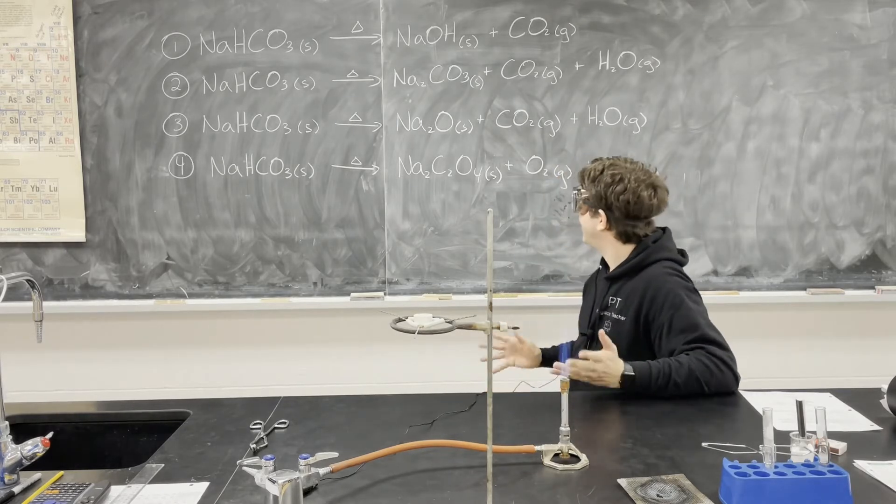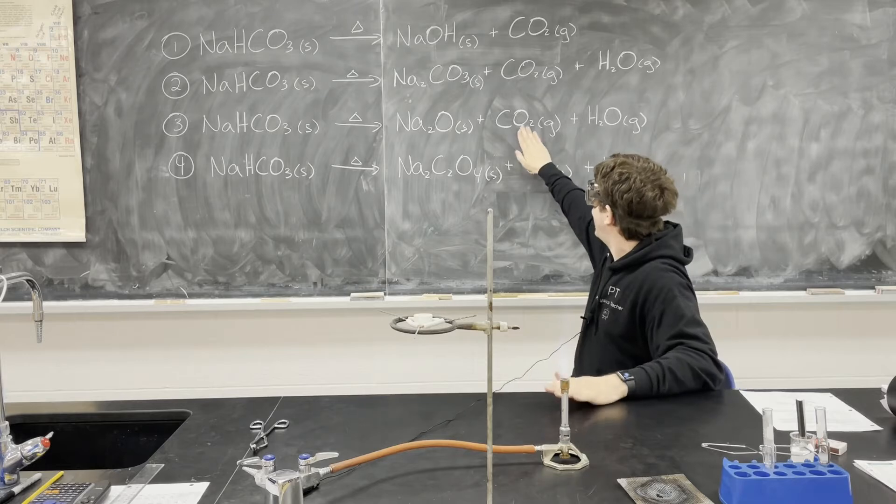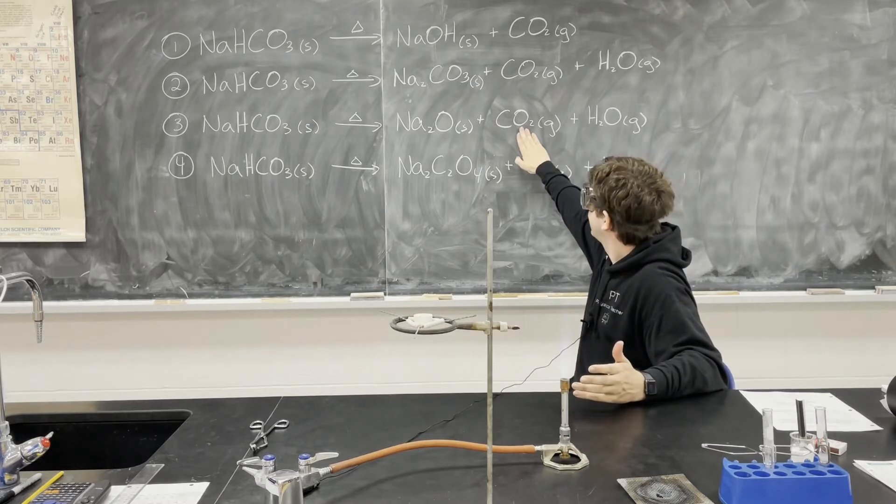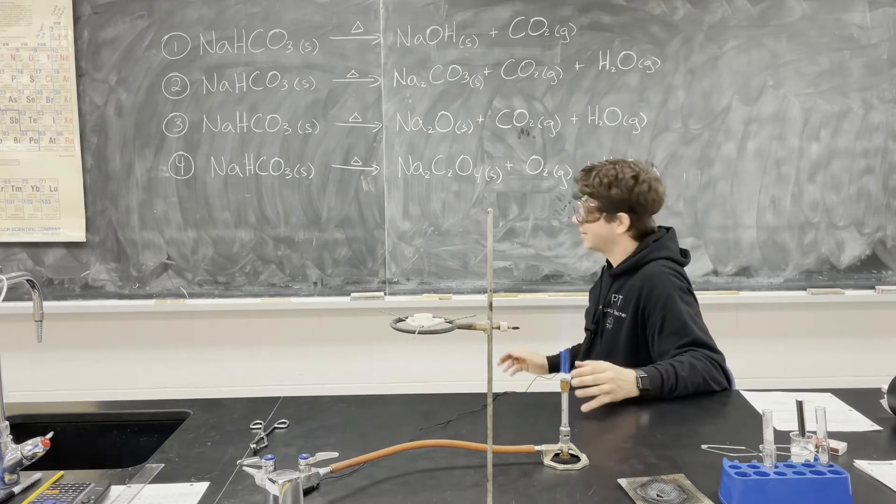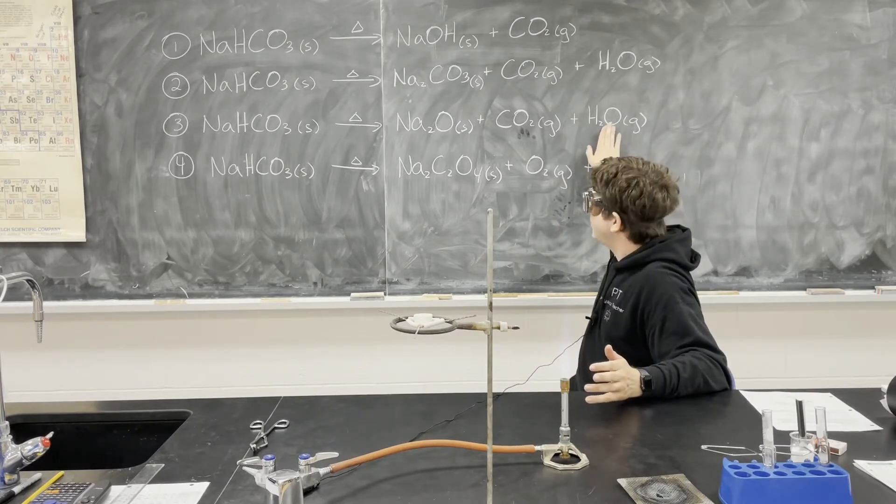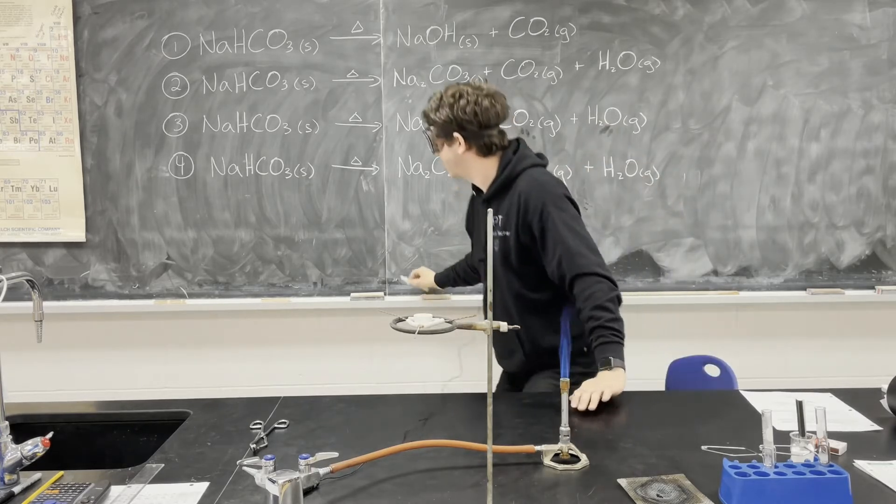So, we can clearly see we get a precipitate, so we have carbon dioxide. And you can probably guess that that condensation is water, so we have water. But just for now, let's cross off number four.